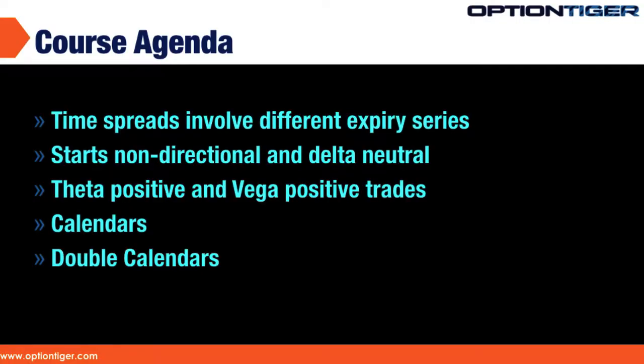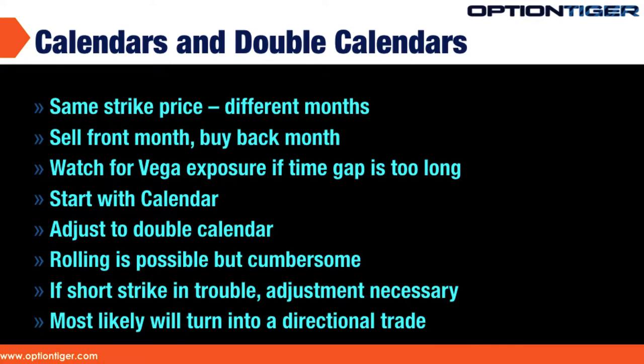In this course we're going to look at time spreads. Time spreads are spreads where we use two different expiry series — different months in the same option spread. Let's first look at how a basic calendar works, and then we'll look at a double calendar. A time spread involves two different months, so we could be looking at the June series and the July series.